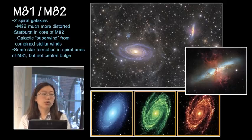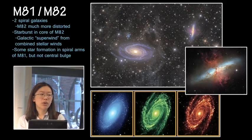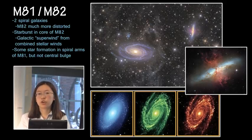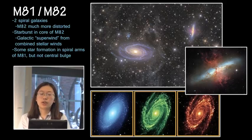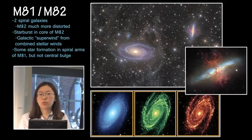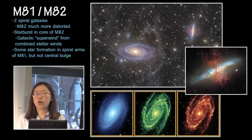We also have M81 and M82, another pair of interacting galaxies. M82 is technically a spiral, though much more distorted than M81. Both are triggering starbursts, with the starburst occurring at the core of M82. Because so many young massive stars are being formed, their stellar winds combine to create what's called a galactic superwind that is actually blasting dust and gas off the galaxy — visible in red on the right. Meanwhile, in M81 there's some star formation in the spiral arms but not much in the central bulge, and in the infrared image most of the strong emission comes from the spiral arms.